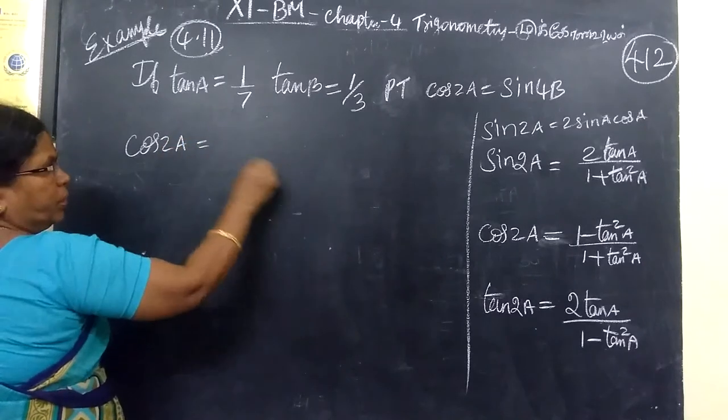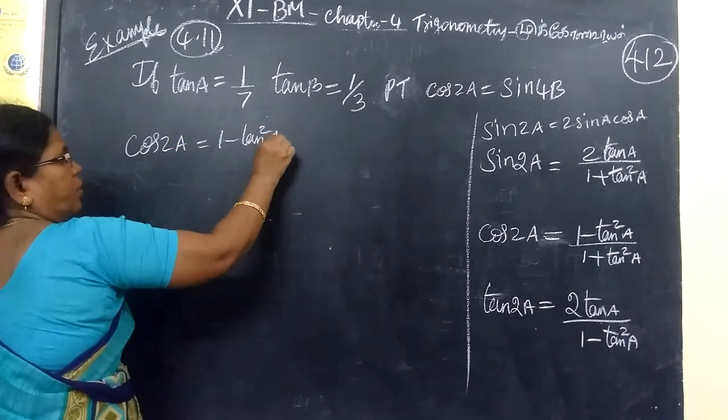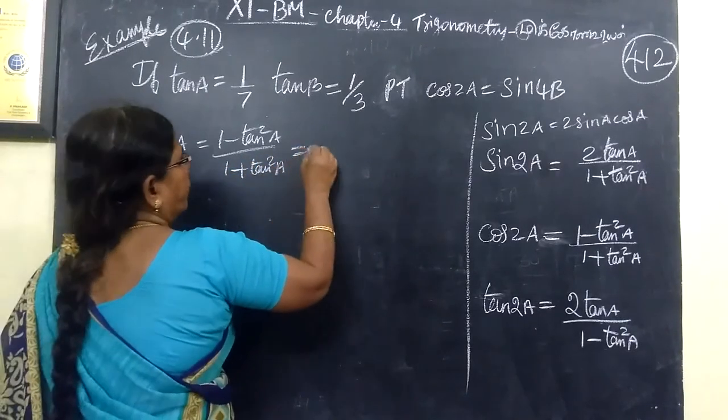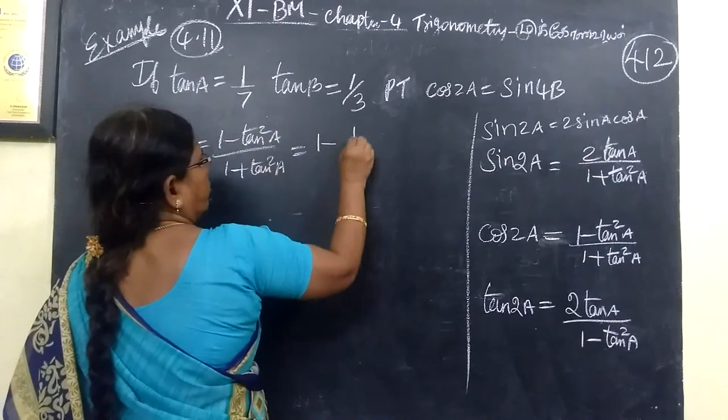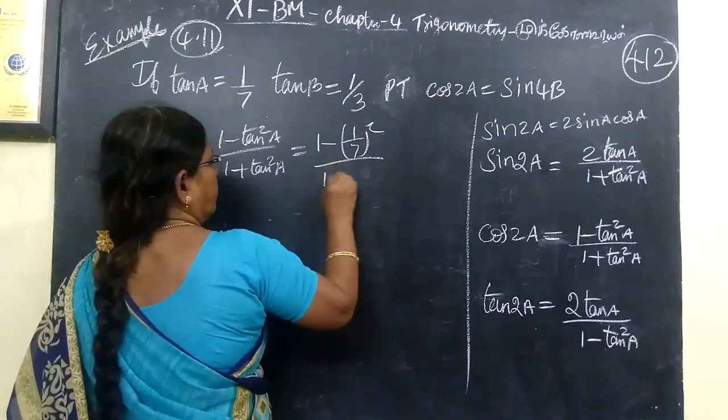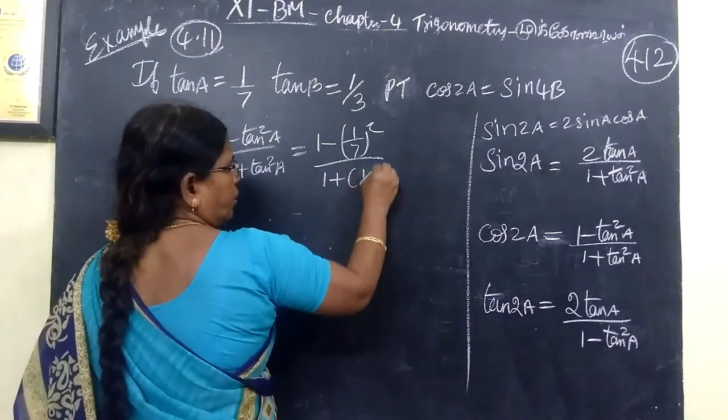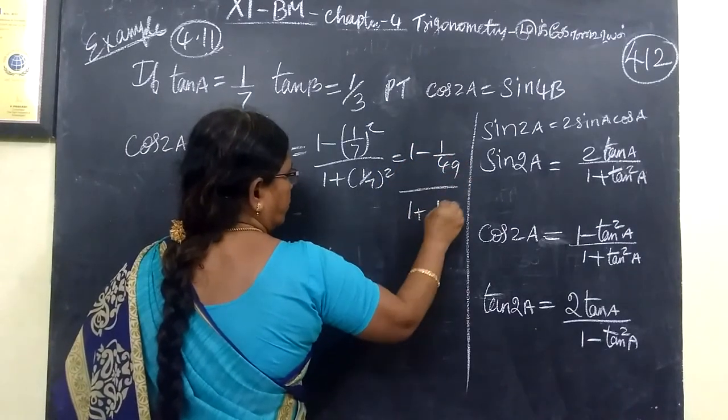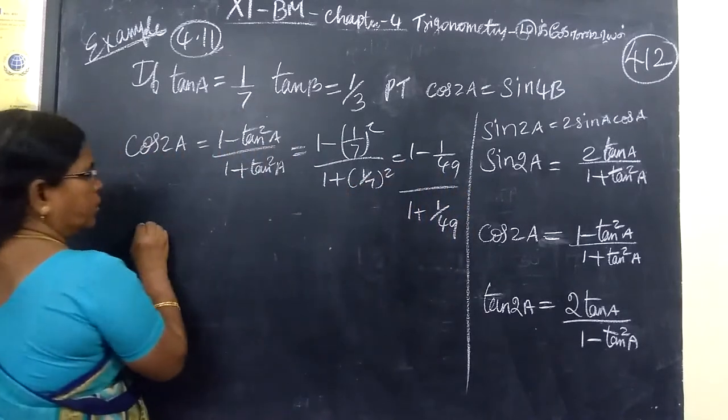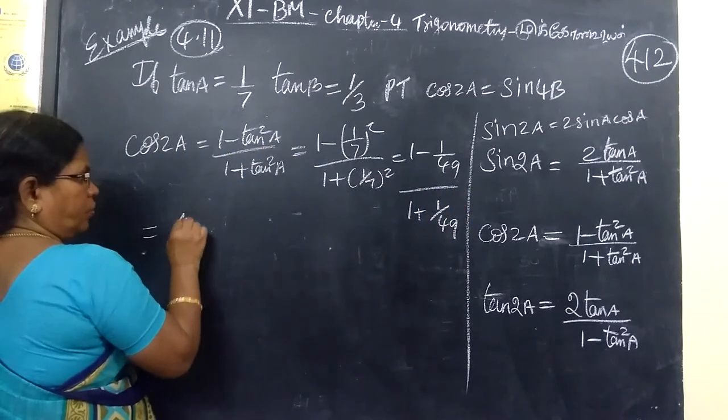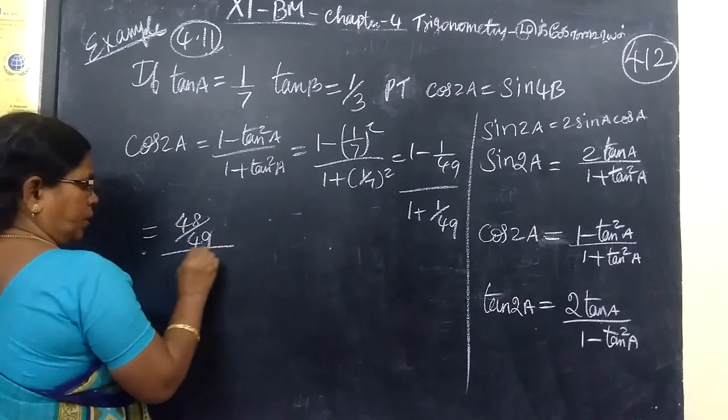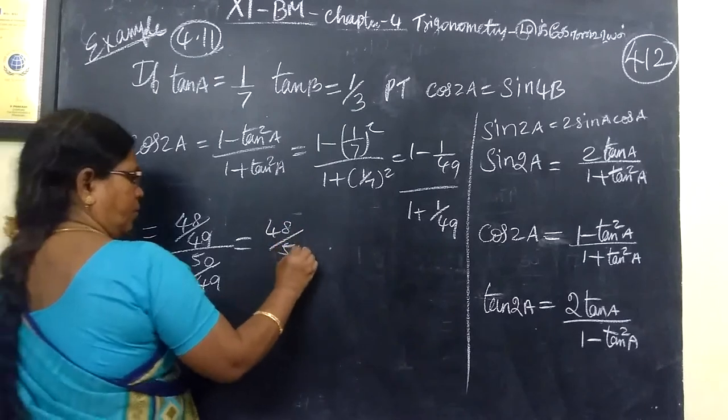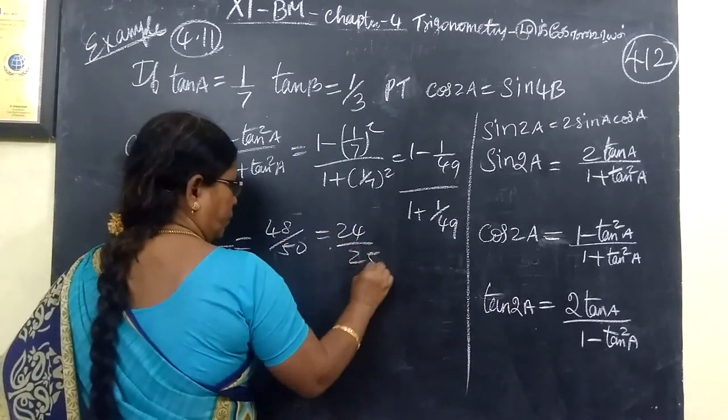So, cos 2a equals 1 minus tan square a by 1 plus tan square a. That's 1 minus 1 by 7 whole square, by 1 plus 1 by 7 whole square. So, 1 minus 1 by 49, by 1 plus 1 by 49. Cross multiply. So, equal to 49 minus 1, 48 by 49 plus 1, 50. So, answer is 48 by 50. That is 24 by 25.